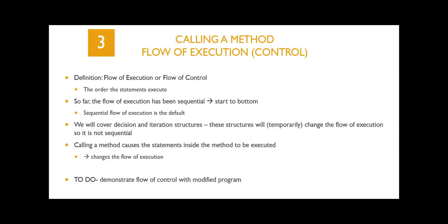Now that we know how to call a method, let's talk about flow of execution or flow of control — this simply means the order that the statements will execute. So far, the flow of execution in your programs has been sequential, which is the default. In a few weeks we'll cover the decision structure and the iteration structure, which will temporarily change the flow of execution — it might skip or loop — but in the end everything returns back in sequence.